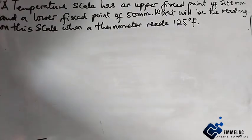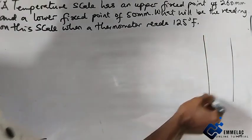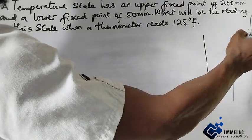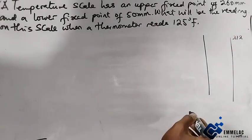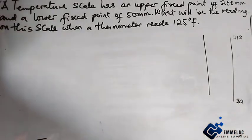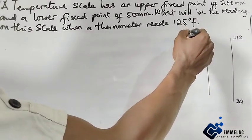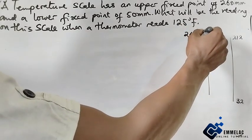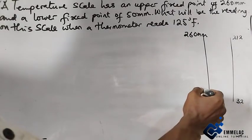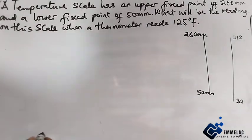Let us compare these two scales. For the Fahrenheit, we know that the upper limit is 212 and the lower limit is 32. And for this scale that is being given here, the upper limit is 260 millimeter and the lower limit is 50 millimeter.